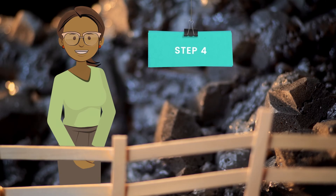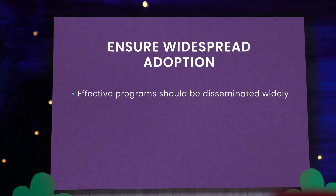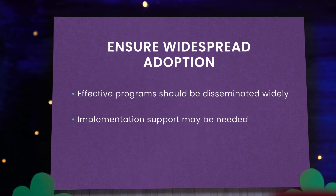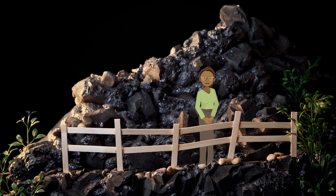Step 4 is to assure widespread adoption. Once programs have proven effective, they should be disseminated broadly. Effective programs may require additional support as they are implemented in new settings or among different populations. This may include training, monitoring, and technical assistance to support effective implementation. Additional assessments to determine which components can be adjusted and which ones must be delivered as originally developed may be necessary. It's an ongoing process to keep your efforts sustainable and meet the needs of diverse populations.